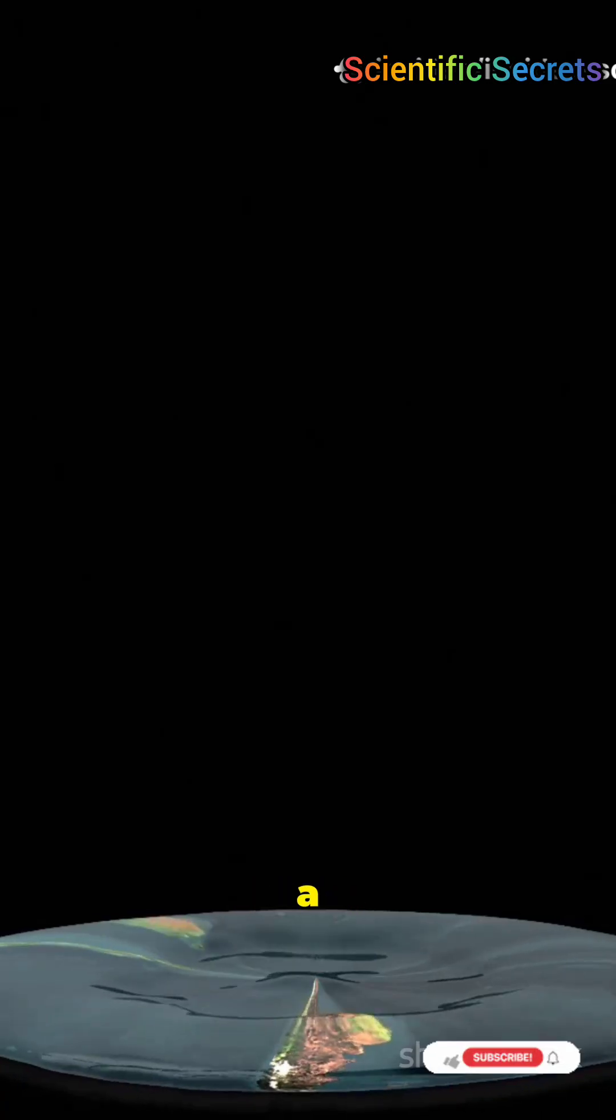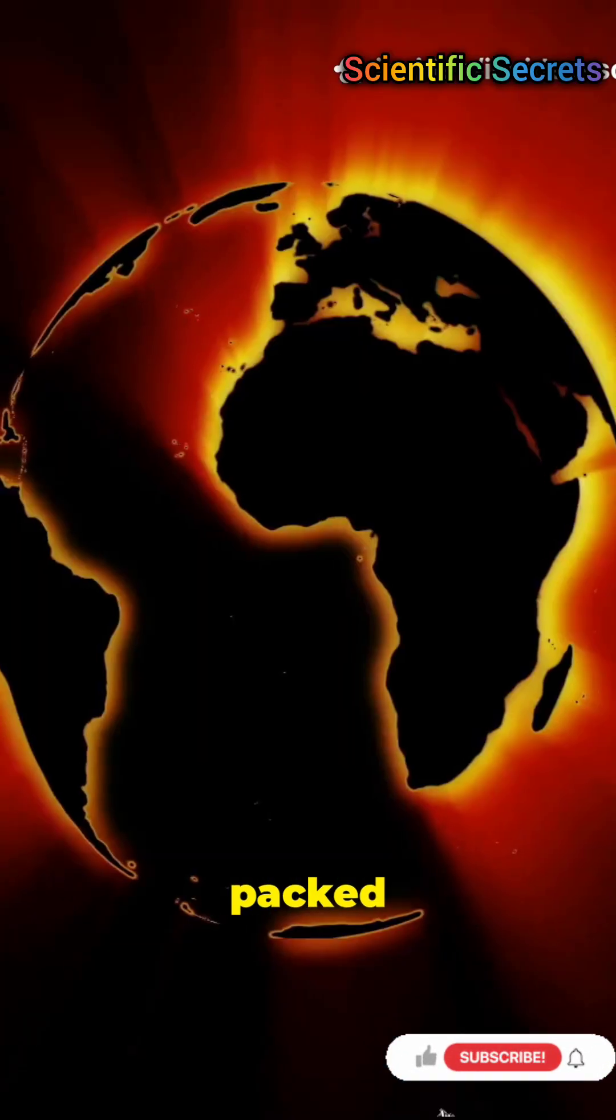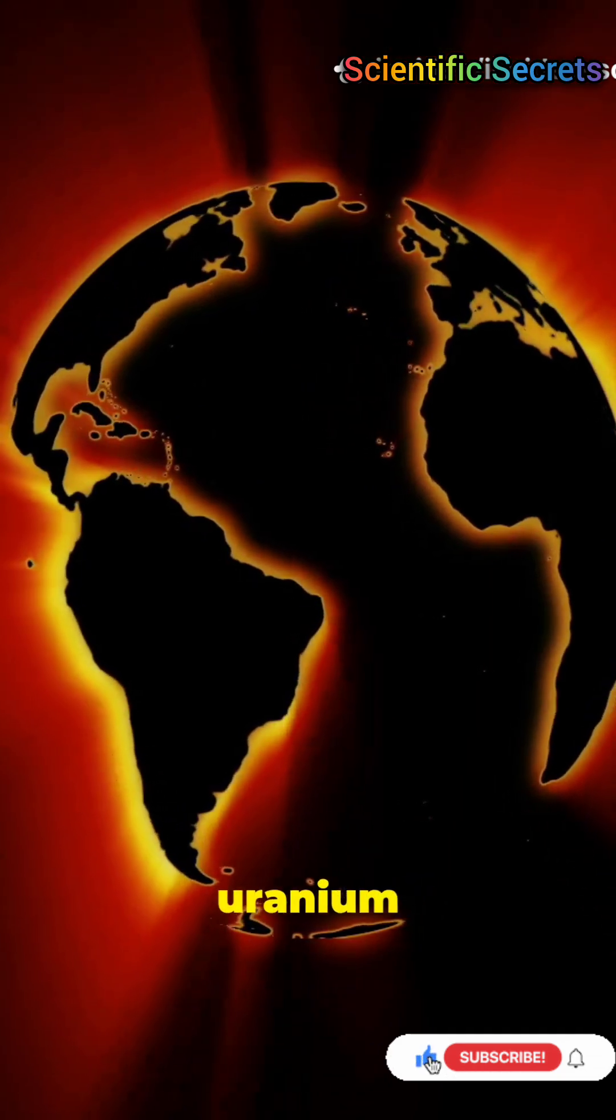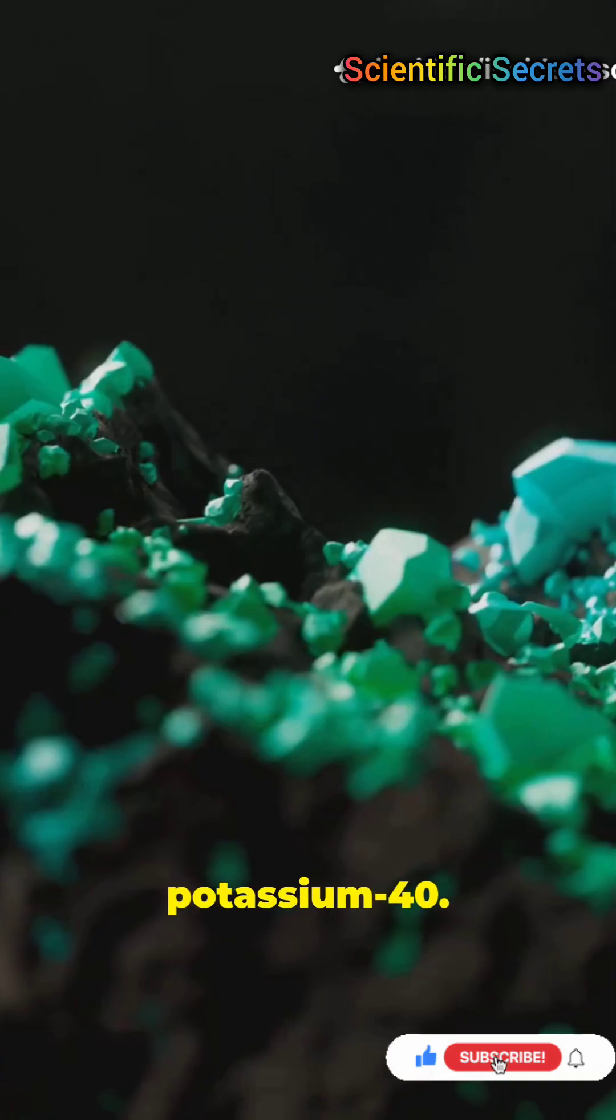Beneath the crust, Earth hides a molten secret. The core, packed with radioactive materials like uranium, thorium, and potassium-40.